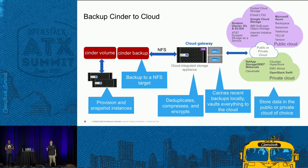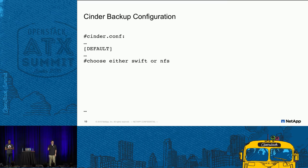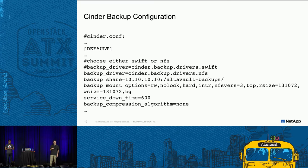There are reasons you would want to use the public cloud as a backup target — mainly for scalability and elasticity. Cinder backup configuration is extremely simple. In cinder.conf, under the default stanza, you choose either Swift or NFS. For Swift, provide the backup driver as shown. For NFS, change the backup driver and provide the NFS export path and a couple of additional required options.